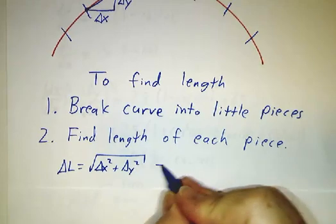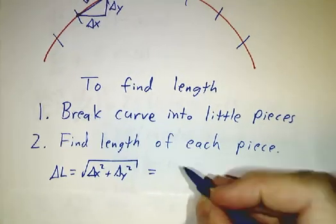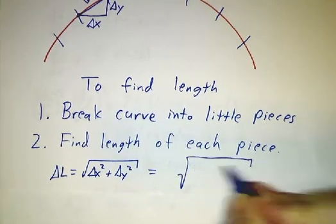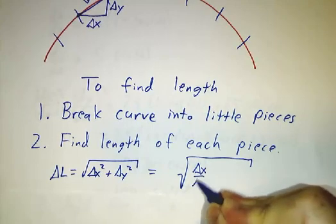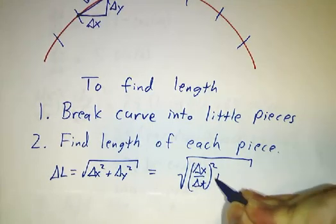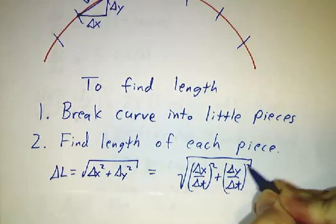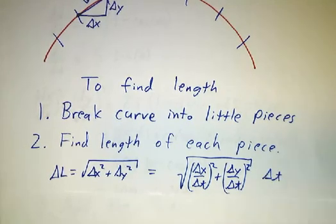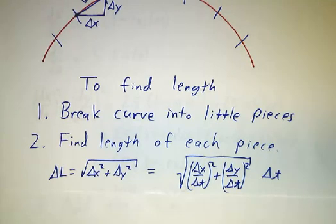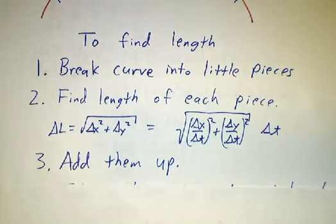And we can rewrite that as the square root of (Δx/Δt)² + (Δy/Δt)² all times Δt. And then we add up all the little pieces.